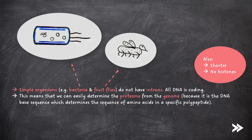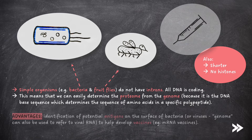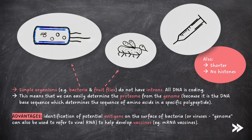This has many advantages. For example, it can allow the identification of potential antigens on the surface of bacteria or viruses — as genome can also be used to refer to viral RNA — to help develop vaccines, such as mRNA vaccines.